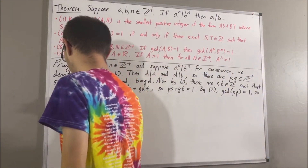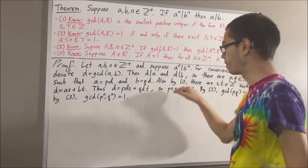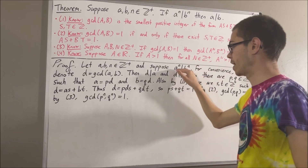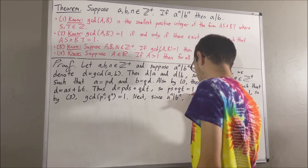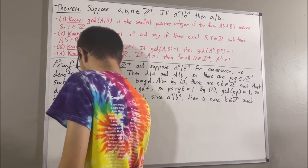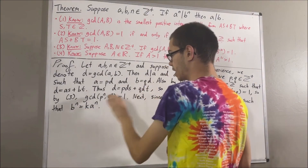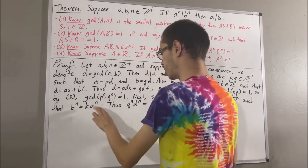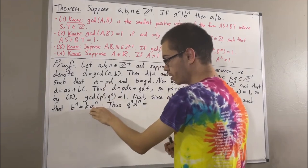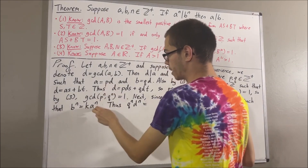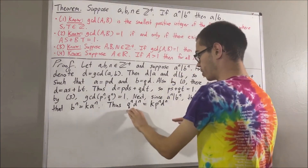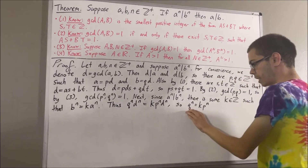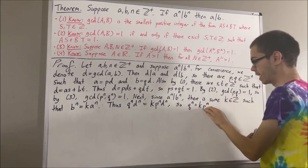Now let's use the fact we haven't used yet. Since a to the n is a divisor of b to the n, there is some integer k such that b to the n is equal to a to the n times k. If we substitute b for qd on the left side, the left-hand side becomes q to the n times d to the n. And if we substitute a for pd on the right-hand side, the right-hand side becomes k times p to the n times d to the n. We can divide d to the n from both sides, leaving q to the n equals k times p to the n. Therefore, p to the n is a divisor of q to the n.